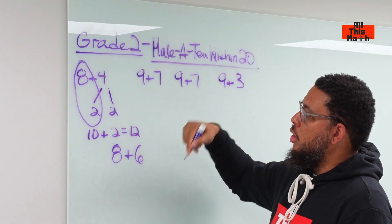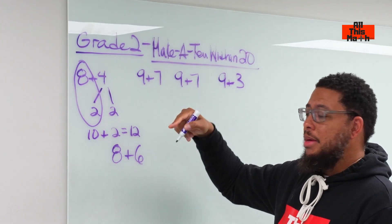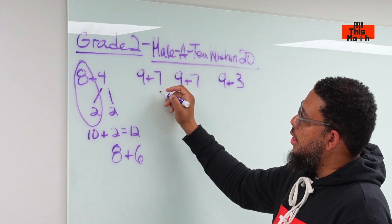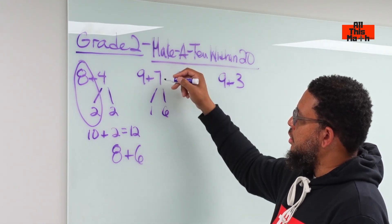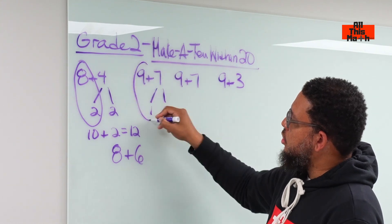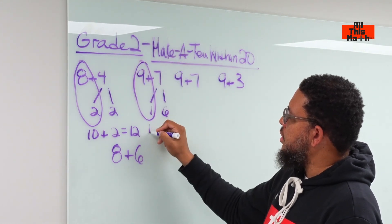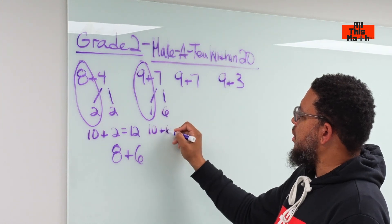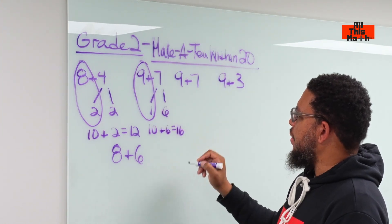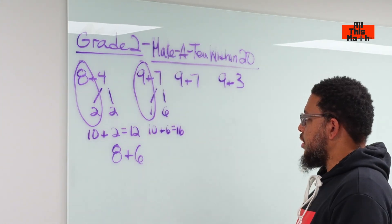But where am I going to get the 1 from that I need to add to the 9 to make it a 10? I'm going to get it from the 7. So, I break the 7 down into 1 plus 6 because 1 plus 6 is 7 and that's where I'm getting my 1 from. So, 9 and 1 is going to become 10. Then I bring the 6 down. I got 10 plus 6 which is 16. 9 plus 7 is 16.